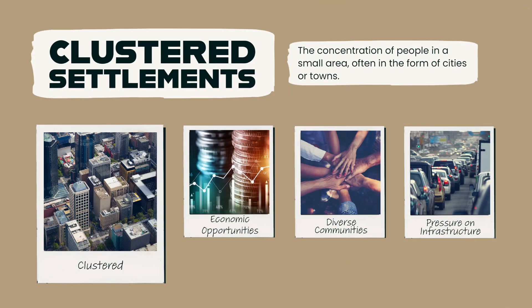Pattern number one is clustered settlement. Clustered settlement refers to the concentration of people in a small area, often in the form of cities or towns. Clustered settlement patterns are common in areas with abundant resources or economic opportunities and can lead to the development of complex and diverse communities.